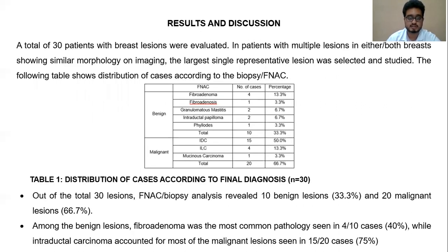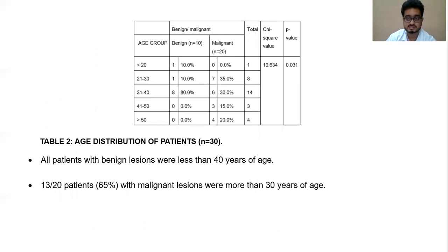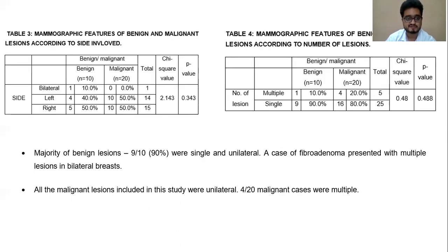According to the pathological final diagnosis, out of 30 lesions, 10 were benign and 20 were malignant. Fibroadenoma was the most common benign pathology while intraductal carcinoma was the most common malignant lesion. All patients with benign lesions were less than 40 years of age while 13 out of 20 patients with malignant lesions were more than 30 years of age. The majority of the benign lesions were single and unilateral, while all malignant lesions were unilateral; however, 4 out of 20 were multiple.